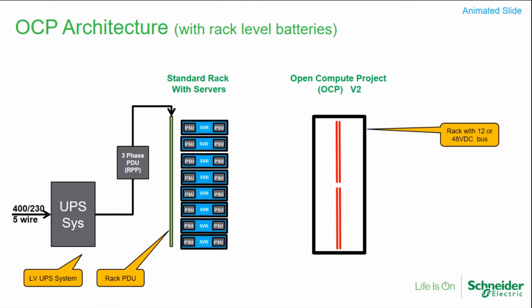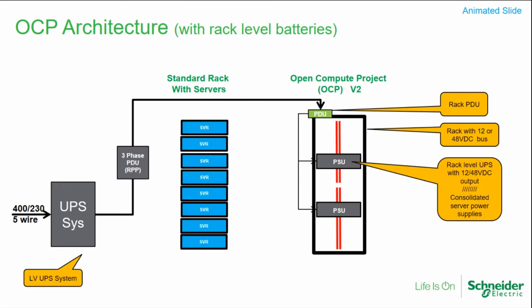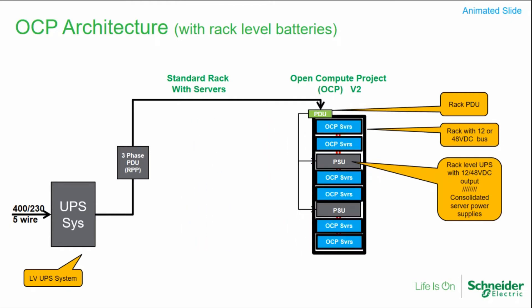What's different with OCP: instead of 19-inch between the rails it's 21 inches, the PDU goes away, and power is distributed to each server via bus bars in the back at 12 or 48 volt DC. These power supplies are no longer in the servers — they're centralized — and AC comes into them through a rectifier that gives you 12 or 48 volts DC. Whereas each server previously had two power supplies for redundancy, they now have none, all centralized at the rack.